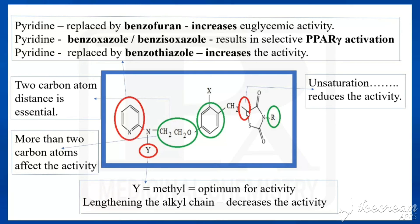Here we have a thiazolidin-2,4-dione nucleus connected with phenyl by means of a methyl bridge. Between that methyl carbon and the fifth carbon of thiazolidinedione, if you are introducing one double bond — so there is unsaturation — the activity would be reduced. Come to Y again: putting methyl at Y is optimum for activity. If you are lengthening the alkyl chain — putting ethyl, propyl, and so on — the activity would be decreased.